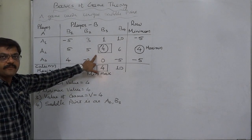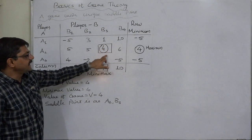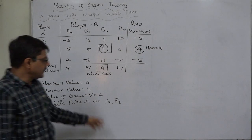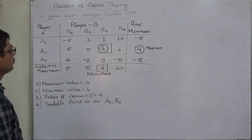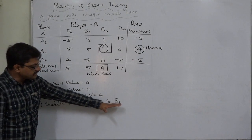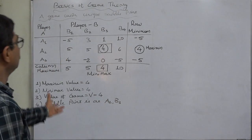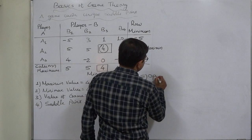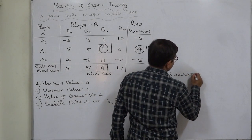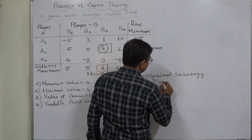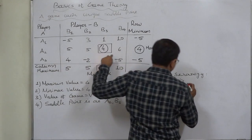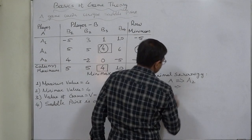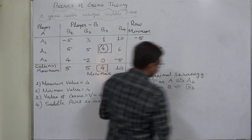That means for player A the saddle point lies in strategy A2, and for player B the saddle point lies at strategy B3. This point A2, B3 is called the saddle point. In the case of a game with a unique saddle point, the strategies at the saddle point also become the optimal strategies for the respective players. So the optimal strategy for A is A2, and for player B it is B3.